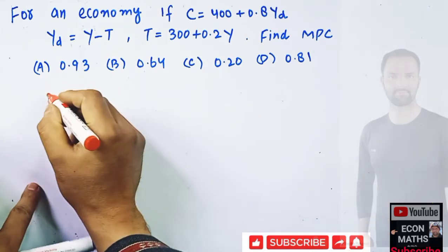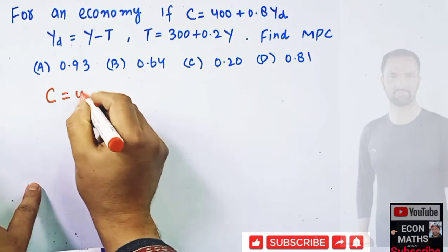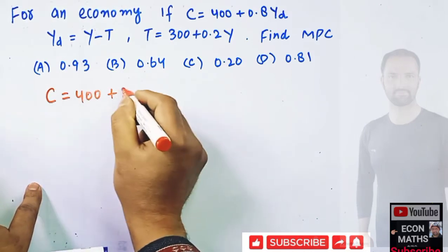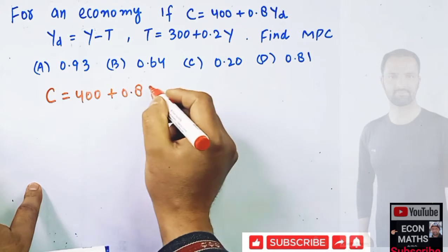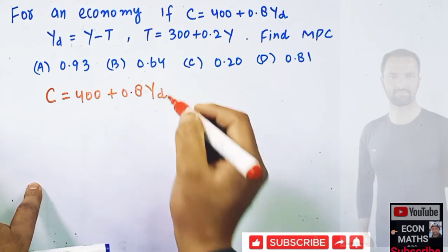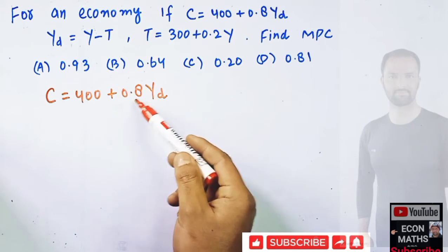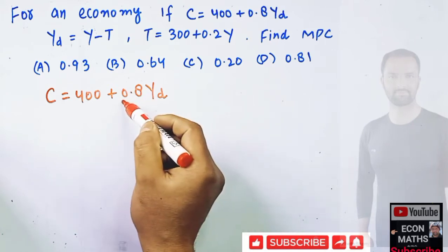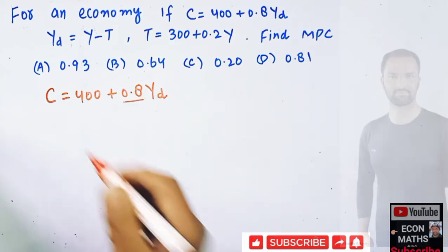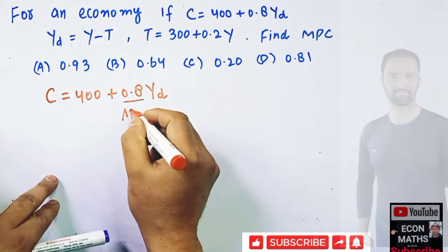So what we are being given here: consumption is equal to 400 plus 0.8 Y subscript d. This 0.8 is actually our marginal propensity to consume of disposable income.